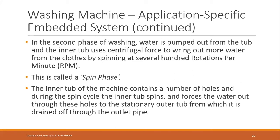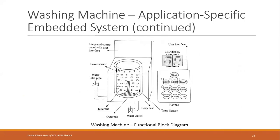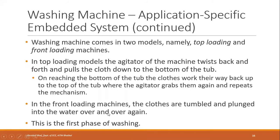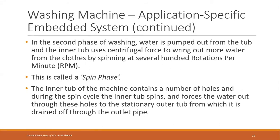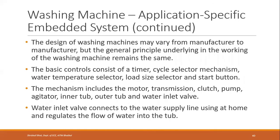The inner tub contains holes, and during the spin cycle the inner tub spins, forcing water out through these holes into the stationary outer tub, from which it is drained through the outlet pipe. For rinsing, fresh water comes in, the process is repeated, and the extra water is removed by high-speed spinning. The design of washing machines varies from manufacturer to manufacturer, but the general principle remains the same.